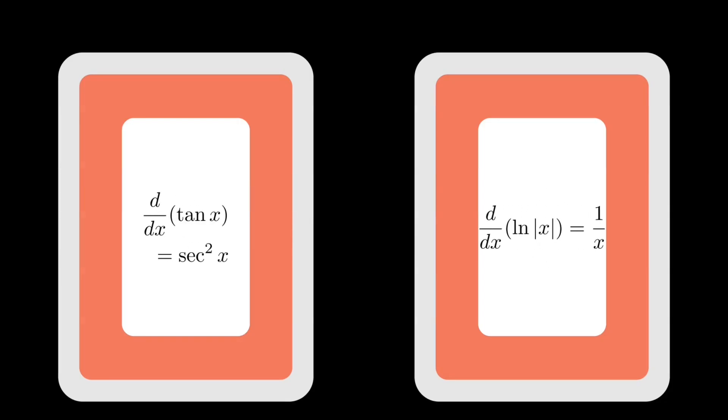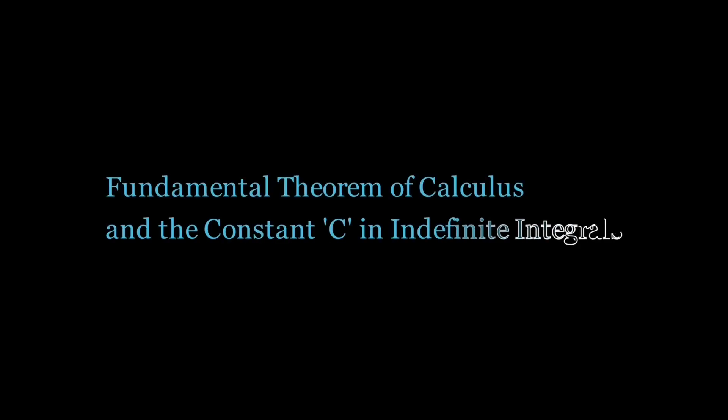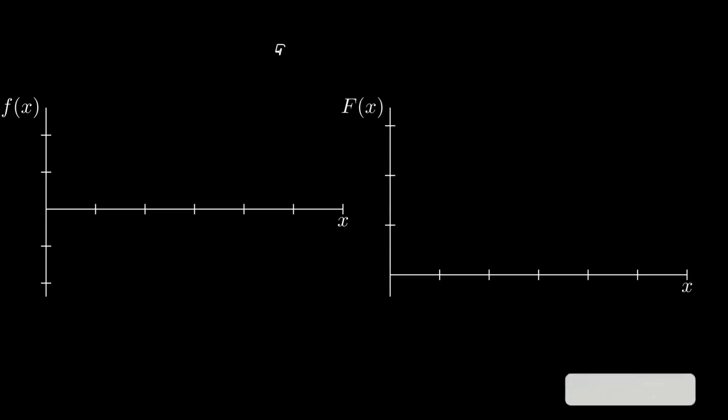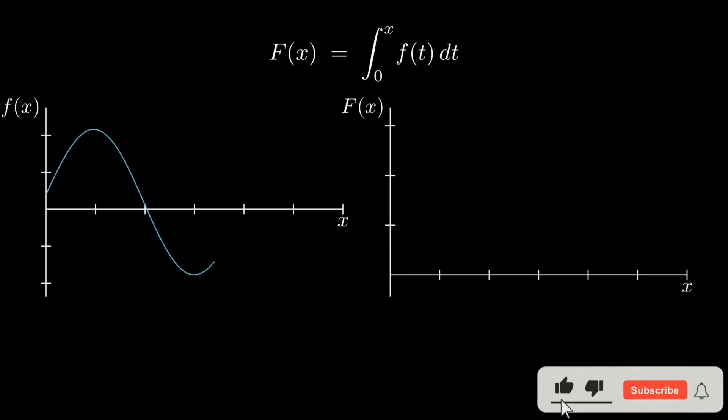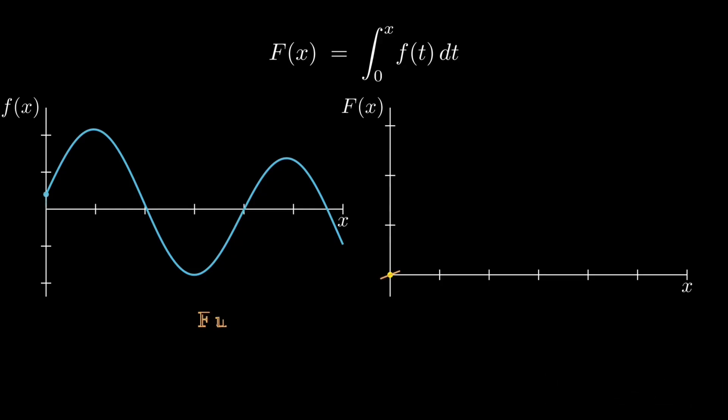You match the slope you know to the function that produces it, plus a constant. Now, let's connect area and anti-derivative directly. Define capital F of x as the accumulated area under f from 0 to x. As x moves, F rises or falls at a rate set by the height of small f, and that is the fundamental theorem of calculus.